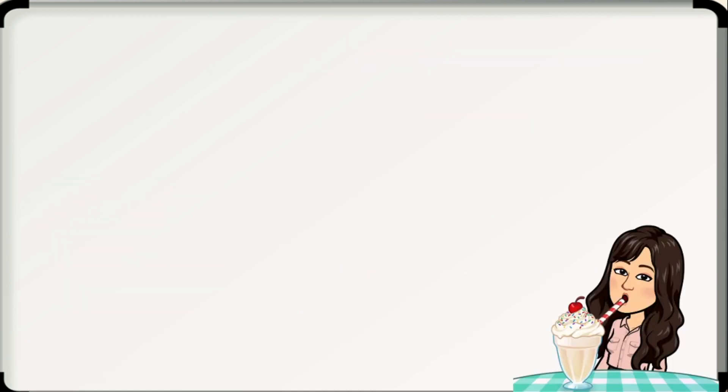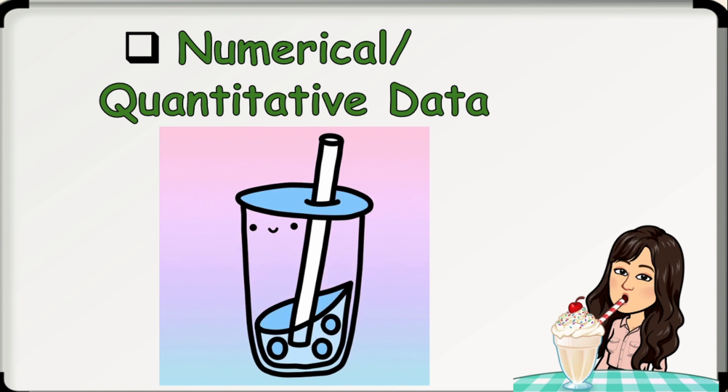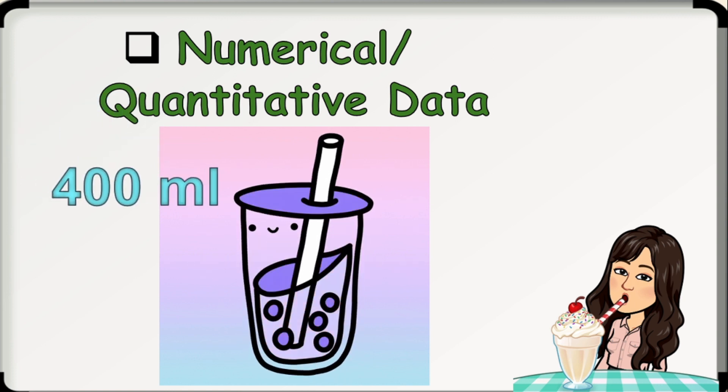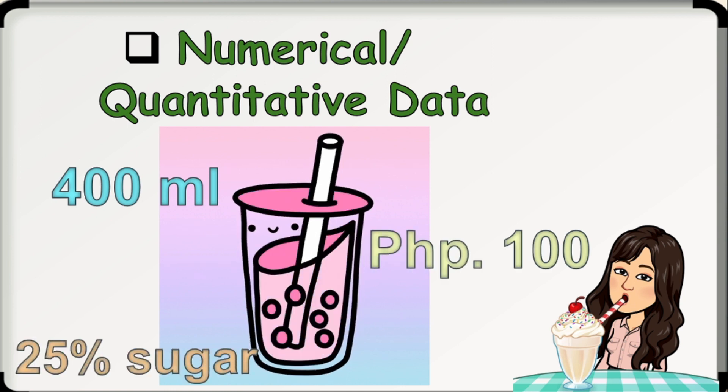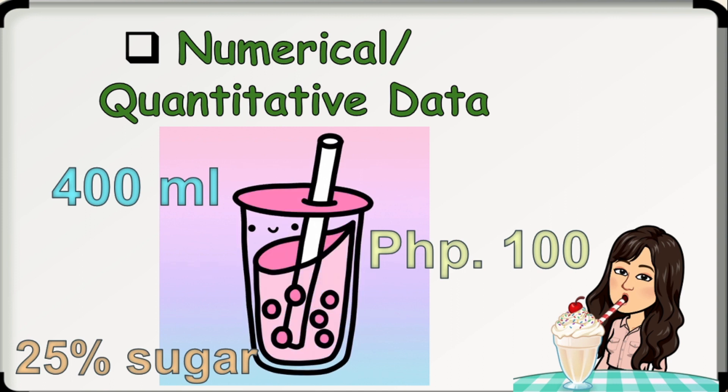First, let's have the numerical or quantitative data, where every value in this set is, of course, a number. For instance, this milk tea has 400 milliliter volume, it costs 100 pesos, and it has 25% sugar. Then we are describing it numerically or quantitatively.